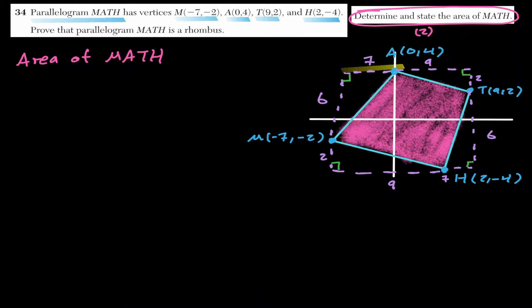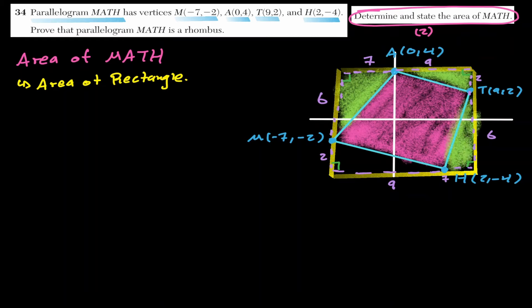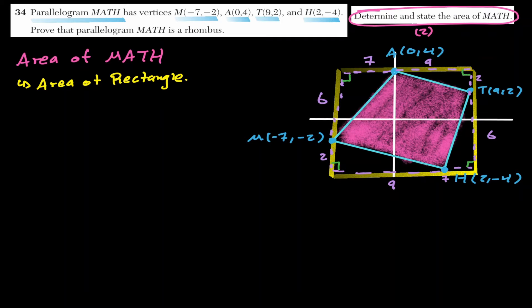To find the area, we consider the area of the outer bounding rectangle and subtract the four corner triangles. Let's label those as triangle 1, 2, 3, and 4, and find each area individually.